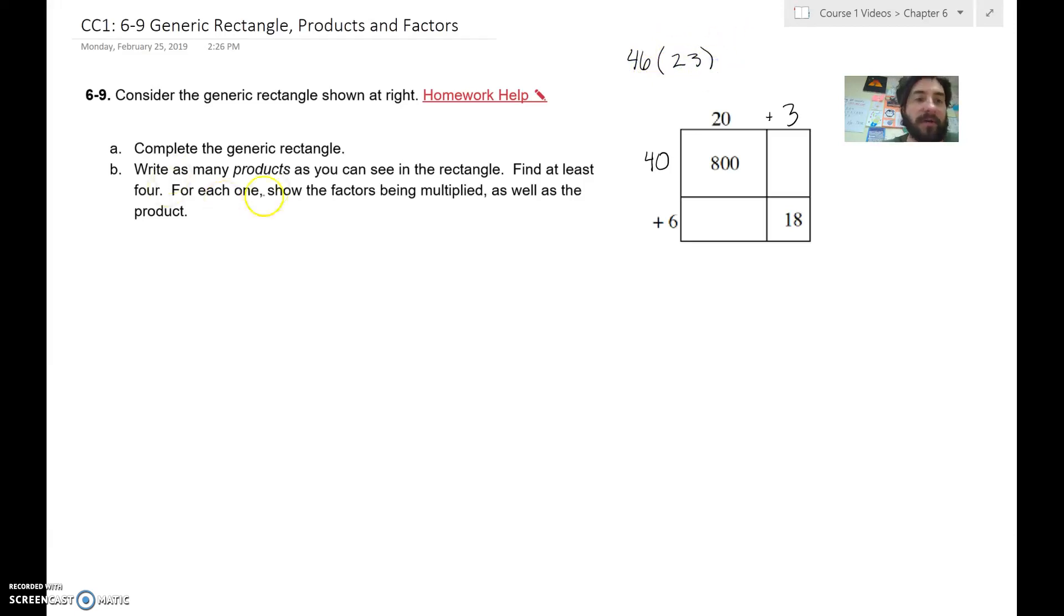That will be one of the factors that I use. I will use that down here for Part B. So 46 times 23, we'll go ahead and get what that is in a minute. Now let's figure out what this is. So one of the factors that we do have, one of the products, I might as well do this at the same time. So one product and factors I see is that 40 times 20, 40 times 20 is 800.